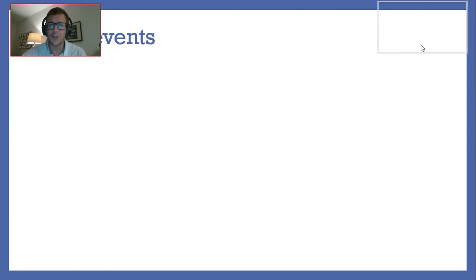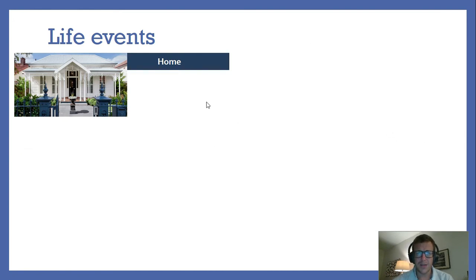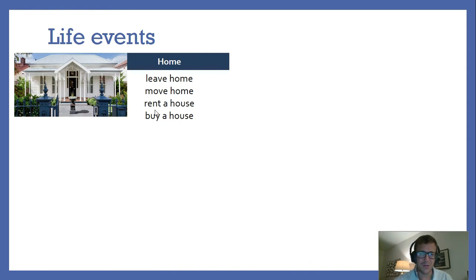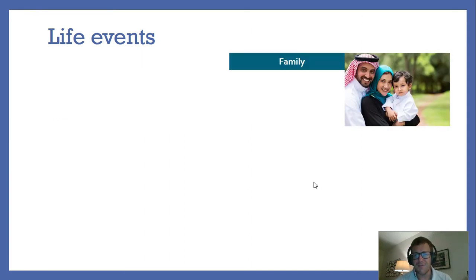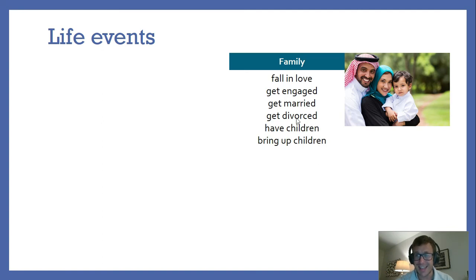Now we move on to life events. There are about 15 to 20 words connected to life events and they fit into these categories: home, family, school, and work. For home: leave home, move home, rent a house or buy a house — renting is when you go to a house but don't own it; you pay money every month to live there. For family: fall in love, get engaged — this means before you get married you promise to get married — get married, and get divorced to stop a marriage. You can have children and bring up children — having children is the actual baby; bring up is giving them character and education as they grow older.